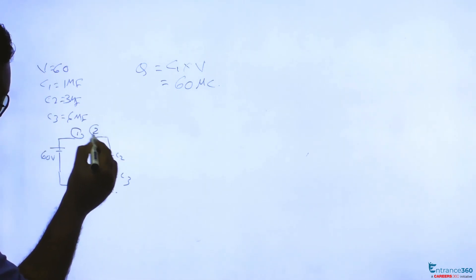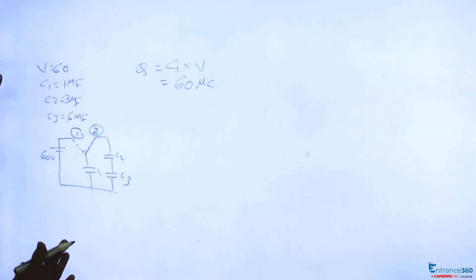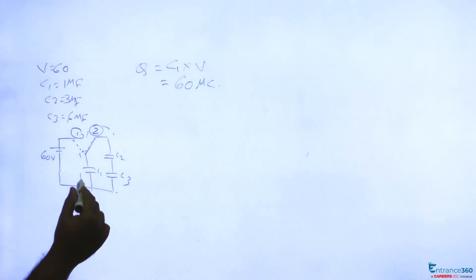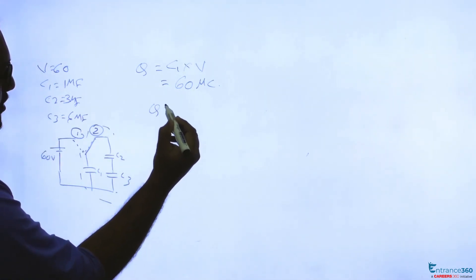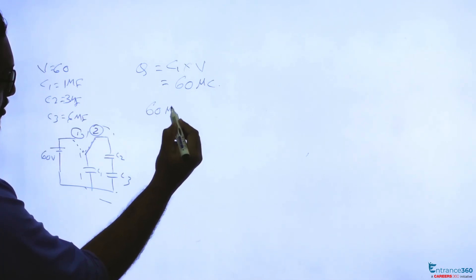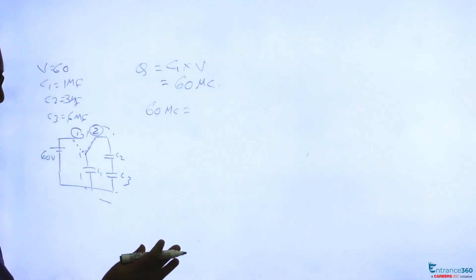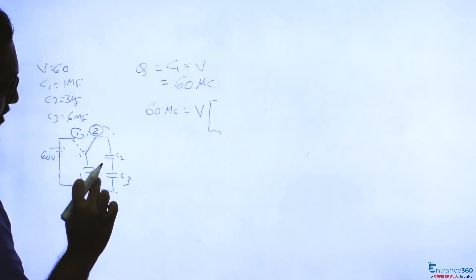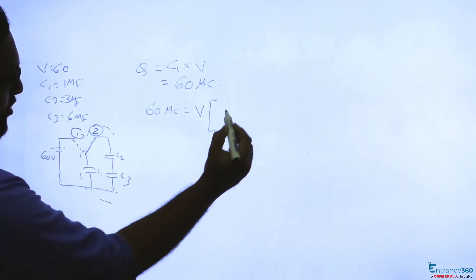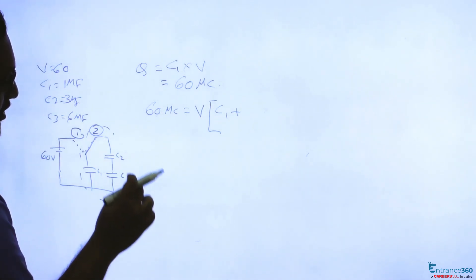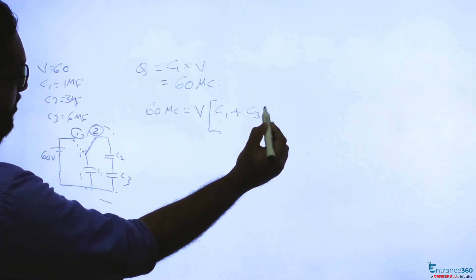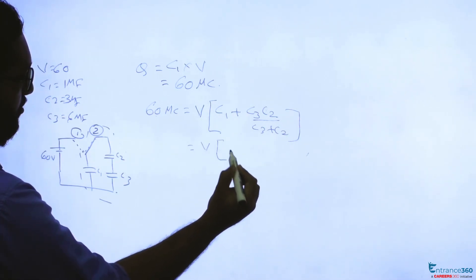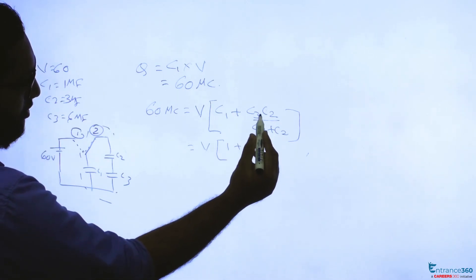Now we are connecting the switch to 0.2. We need to find the common potential for this second circuit. We know the total charge is 60 microcoulombs, which equals total capacitance into common potential V. The total capacitance is C1 in parallel with the series combination of C2 and C3, giving C1 plus C2·C3 divided by C2 plus C3.